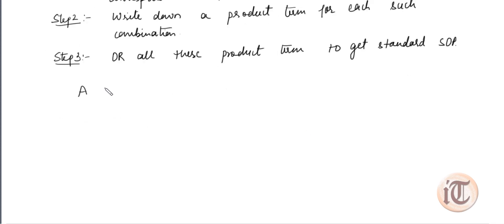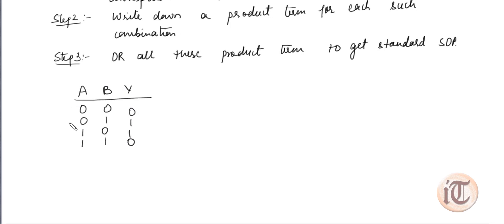We will take one example. I am taking a truth table with variables A and B — two variables. The truth table will be: inputs 00, 01, 10, 11 and the output y will be 0, 1, 1, 0. This is the given truth table and we have to write the standard SOP expression for this truth table.